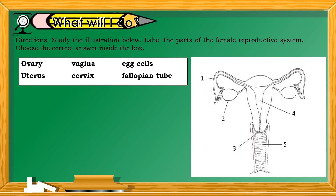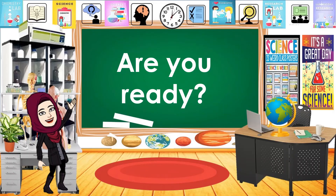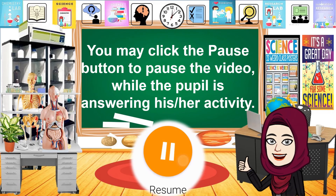Now let's answer what will I do. Directions: Study the illustration below. Label the parts of the female reproductive system. Choose the correct answer inside the box. Number 1: Fallopian tube. Number 2: Ovary. Number 3: Cervix. Number 4: Uterus. And number 5: Vagina. I'm giving you 1 minute to answer the activity.